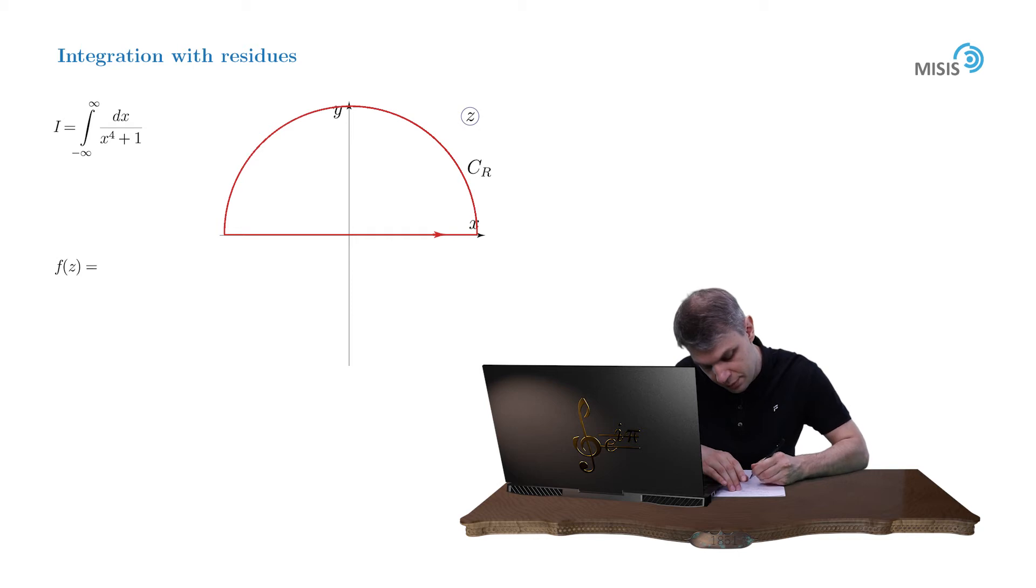Now let's promote our integrand function into a complex plane: f of z equals 1 over (z to the power of 4 plus 1). And study this closed contour integral of f of z dz, which naturally consists of our initial integral plus the integral along the upper semi-circle.